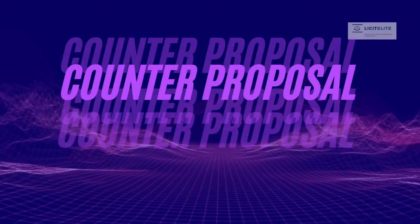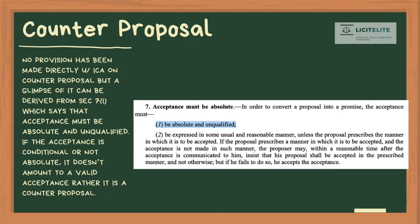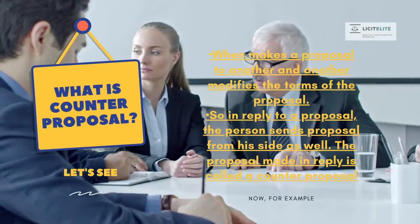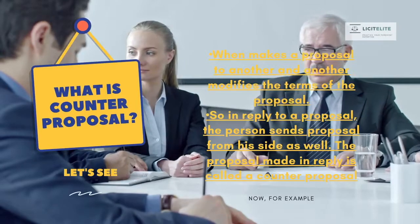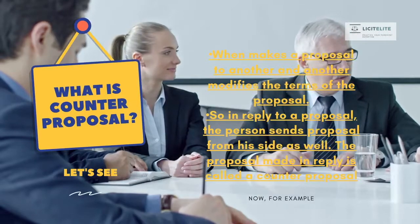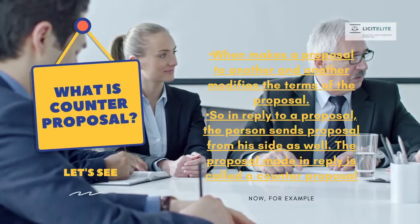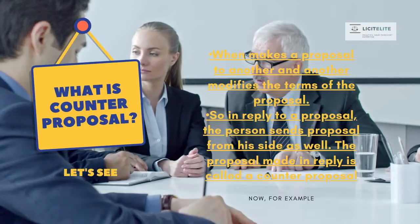Then we shall discuss the fifth kind of proposal: the counter-proposal. No provision has been made directly under the Indian Contract Act on counter-proposal. But a glimpse of it can be derived from Section 7, Clause 1, which says that acceptance must be absolute and unqualified. So if the acceptance is conditional or not absolute, then it does not amount to a valid acceptance; rather it is a counter-proposal. When a person makes a proposal to another and the other person modifies the terms, it is known as counter-proposal.